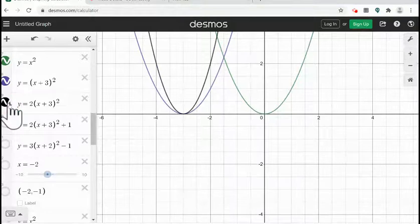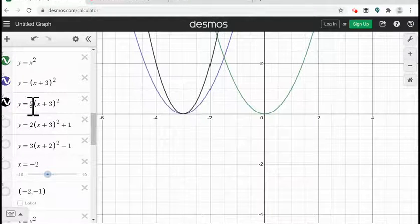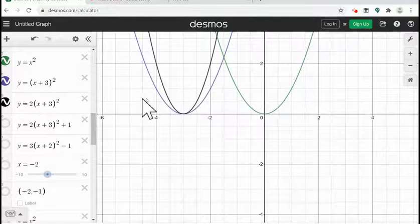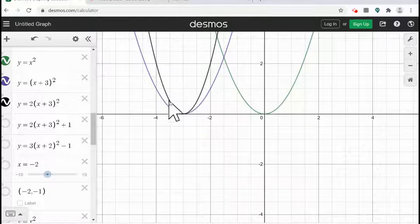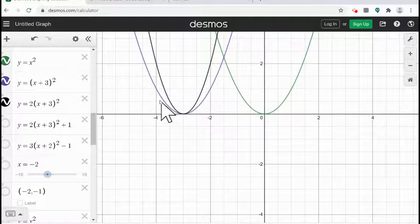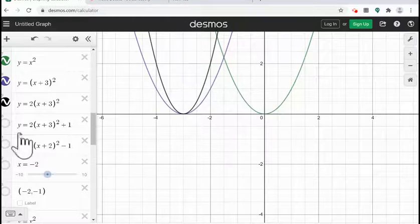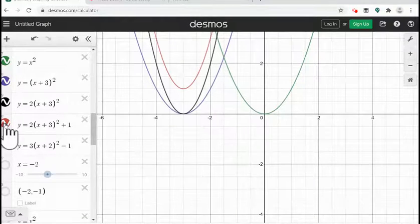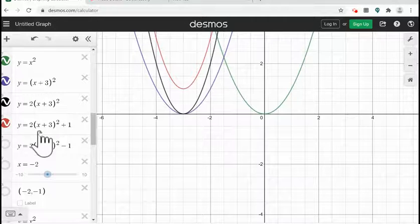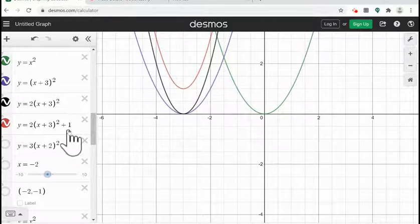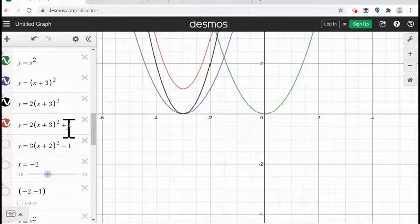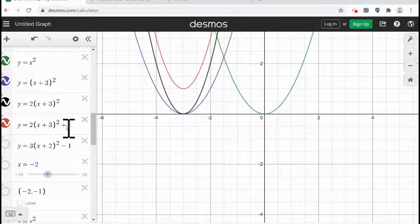And second step we are multiplying by 2 our function, which results vertical stretch. So in the black graph you can see vertical stretch. And the third and last step to reach my function is adding 1 to my function. So it results vertical shift to the up by 1 unit.